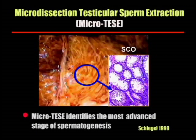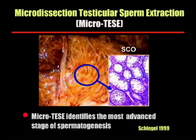Microdissection testicular sperm extraction, also called microTESE, is based on the principle of intraoperative identification of the most advanced stage of spermatogenesis with the aid of an operating microscope. It relies upon our ability to identify differences in tubular size and opacity to decide which tubules are most likely to contain sperm, and therefore should be removed for sperm retrieval.